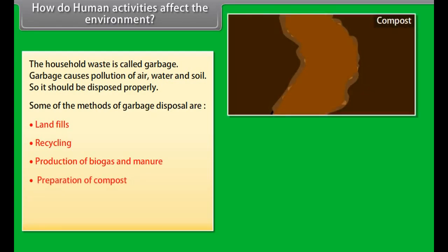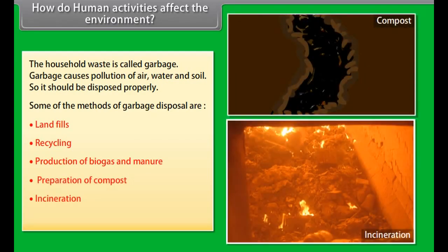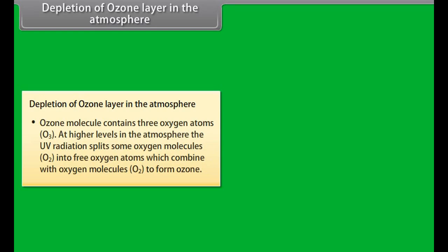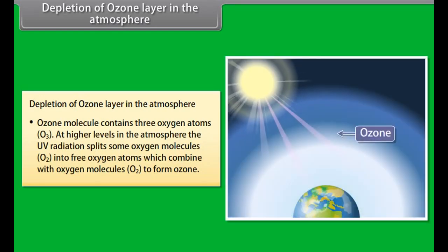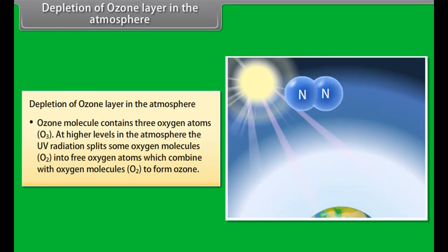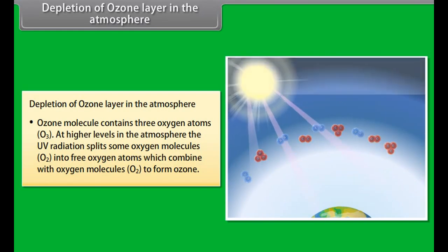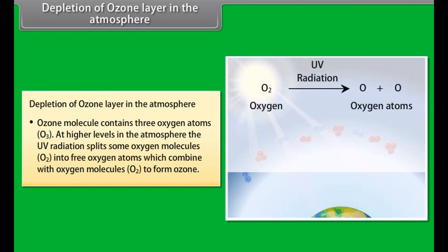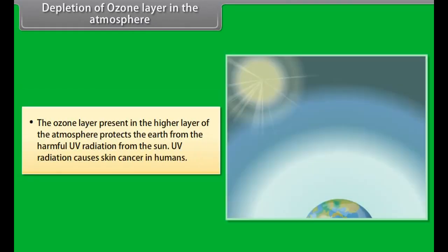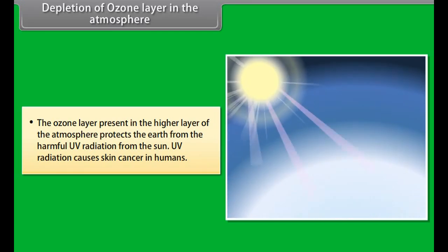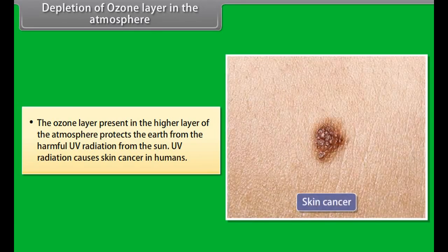Food web. The complex system of interrelated food chains in an environment is known as a food web. Human activities produce a lot of waste materials which are thrown into the environment. These wastes cause pollution of air, water and soil. The waste materials produced are of two main types: biodegradable waste and non-biodegradable waste. The household waste is called garbage. Garbage causes pollution of air, water and soil.